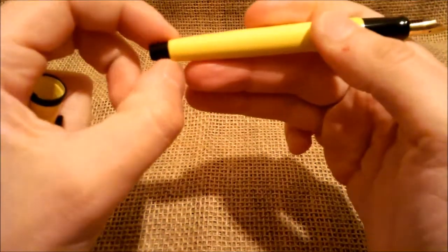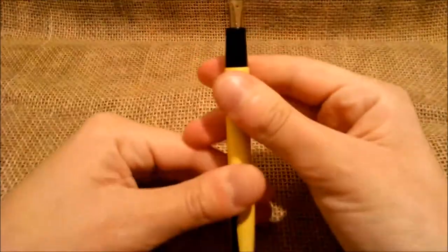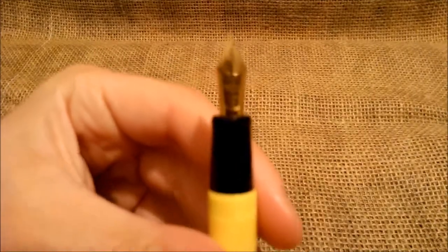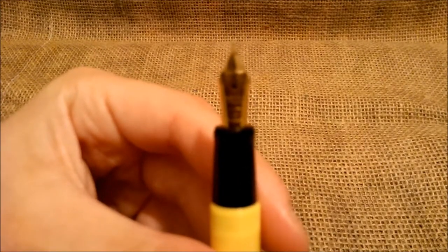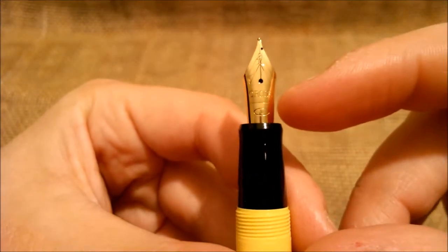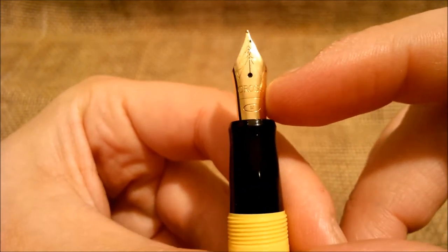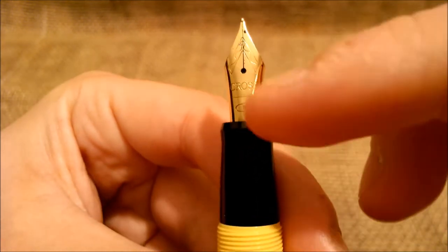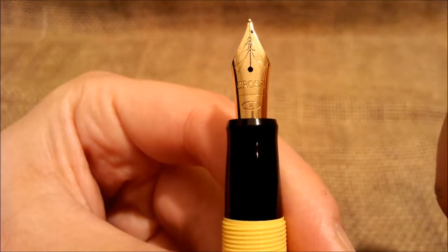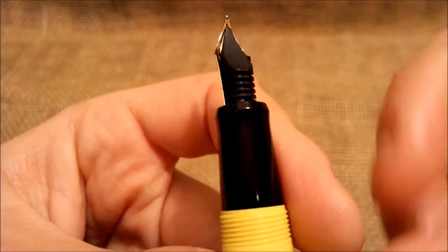You can see there is a little rim here that holds the barrel in place. The nib, the section is made of black plastic, and the nib is a simple steel nib, gold plated nib, very simple. It has this kind of design. It says Cross and M for an M nib. It has a very regular shaped feed.